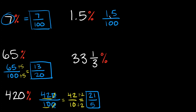The issue here is we have a decimal, and we can't have a decimal in a fraction. What we have to do is move it to the end so it becomes a whole number — so instead of 1.5 up top, this turns into 15. But if we move the decimal point one place up top, we also have to move the decimal point one place in the bottom. Since there's an empty spot, we fill it in with a zero, so instead of 100 it becomes 1,000.